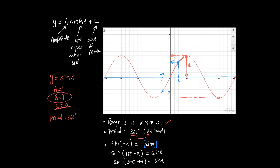The next identity is sin(180 - x) = sin(x). For example, sin(180 - 30) = sin(150) must equal sin(30). So the same value of the function at 30 degrees also appears at 150 degrees, which is the angle 180 minus x.